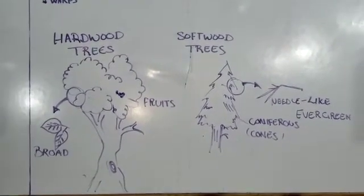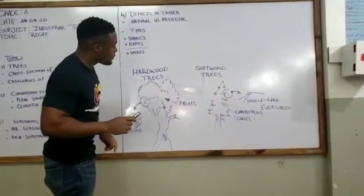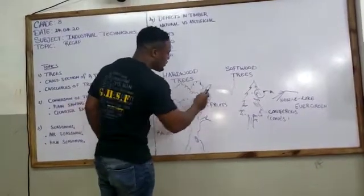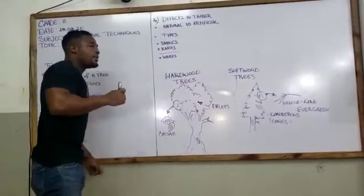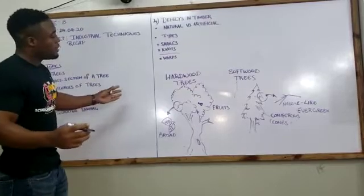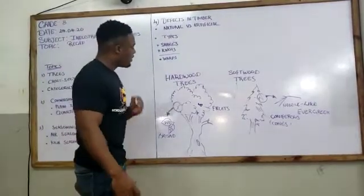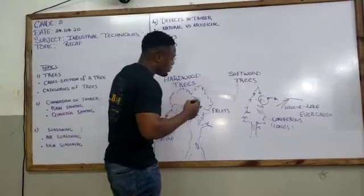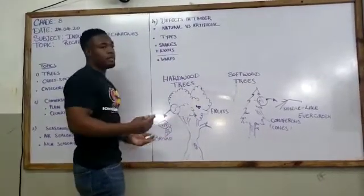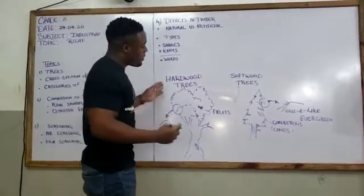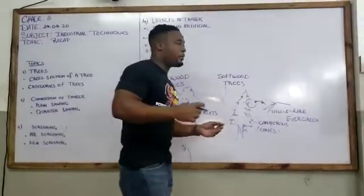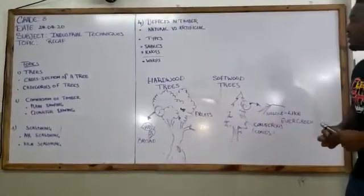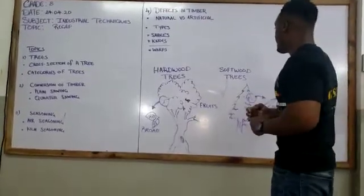Continuing, one more key element that must be noted when we are looking at the distinction between hardwood and softwood trees, are the climatic areas in which these trees tend to grow. Now, for hardwood trees, these trees tend to grow in warmer climates. They grow in warm areas. For example, if you were to pick up the areas around the Caribbean, these trees would be prominent in those areas.